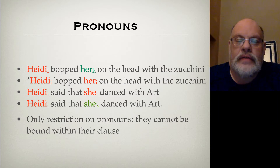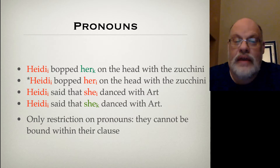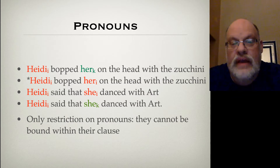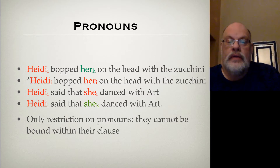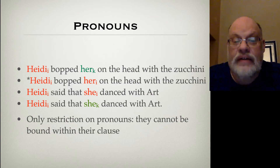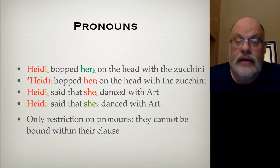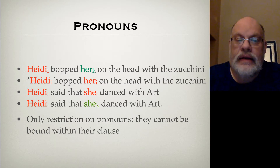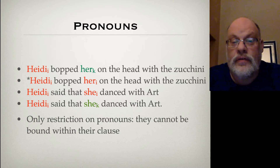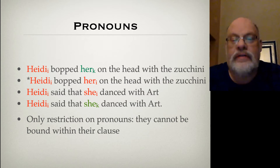It appears to be the case that the major restriction on pronouns is exhibited in sentence two. They can't be bound — they can't have the same indexing as their antecedent and be co-indexed by the antecedent if they're in the same clause as the antecedent. In all the other three acceptable cases, the pronoun either doesn't have an antecedent — like in the first sentence, "Heidi bopped her subscript k on the head with a zucchini," there's no antecedent — or in the last sentence, "Heidi said that she danced with Art," that one has the k index again, which means it's not co-referent with Heidi. And in the case where it is bound, they have to be bound in different clauses. So Heidi and she are co-indexed, and Heidi does C-command she, but they're in different clauses.